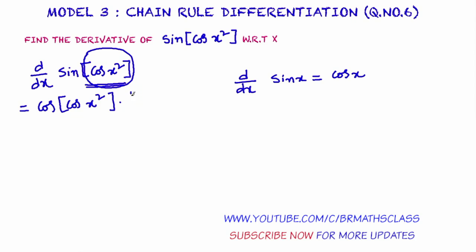Which one you imagined as x, you need to differentiate it. You imagined cos x squared as x, so you need to differentiate it. We are finding the derivative of sine of cos x squared — we imagined cos x squared as x, so we write cos of cos x squared into d by dx of cos x squared.